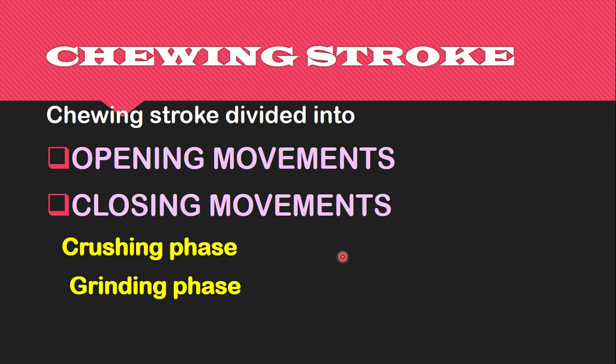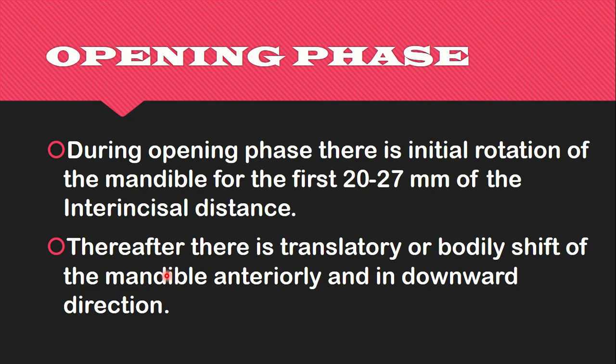The chewing stroke is divided into opening and closing movements, and under closing movement we have the crushing and the grinding phase. In good occlusion, predominantly we have a vertical chewing stroke; in bruxism we have a broad chewing stroke; and in mild malocclusion the chewing stroke may be irregular or less repeatable.